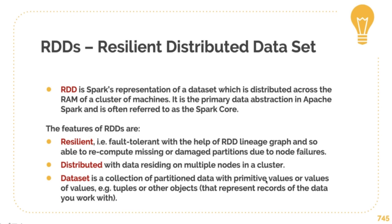So let's talk about RDDs — an important part of Spark. RDDs stand for Resilient Distributed Dataset. They are Spark's way of distributing load across the RAM of clusters of machines, and it is the primary data abstraction in Spark, often referred to as the core of Spark. The features of this are that it was resilient and very fault tolerant with the help of the Lineage Graph, and it allowed for recomputation of damaged partitions due to node failures — so if one computer went down, it can redo that work on another computer. Data resides on multiple nodes in a cluster, and datasets are collected in partitions with primitive values, tuples, and other objects.